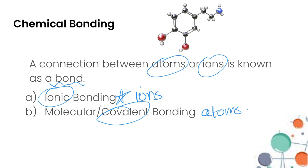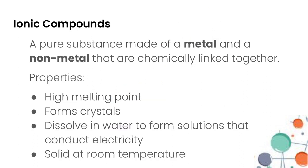So let's look at ionic compounds. Ionic compounds are those that are made up of a metal - remember metals are found on the left side of our periodic table - and a non-metal, so those that are found on the right side of our periodic table.